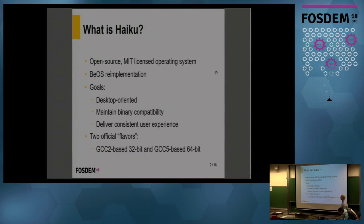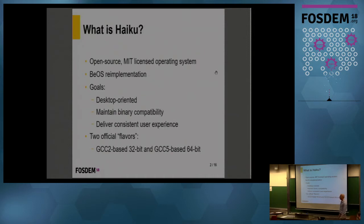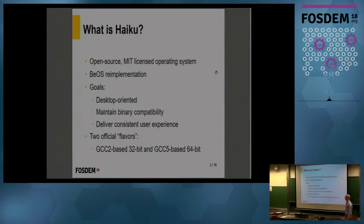What is Haiku? Haiku is an open source, MIT licensed operating system. It is a BeOS implementation. BeOS was an operating system that died in 2001 because the company behind it went bankrupt, but it has a lot of really nice technical solutions. Our goals are to be desktop-oriented — we are not aiming for tablets or anything like that. We are focused on making sure that working on a desktop is comfortable. We maintain binary compatibility with BeOS, so you can run your old applications without recompiling them, and we want to deliver a consistent user experience, which we can do by controlling the whole stack.